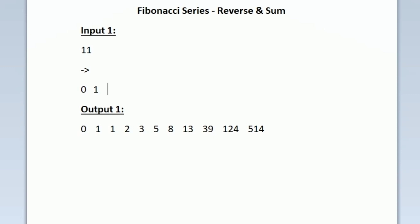In this question we should not add the previous two terms directly — we should reverse the previous two terms and add the reversed values. So the third value uses reversed terms. After reversing zero it remains zero, and after reversing one it remains one, so zero plus one is still one, the same as the normal Fibonacci series for single-digit numbers.